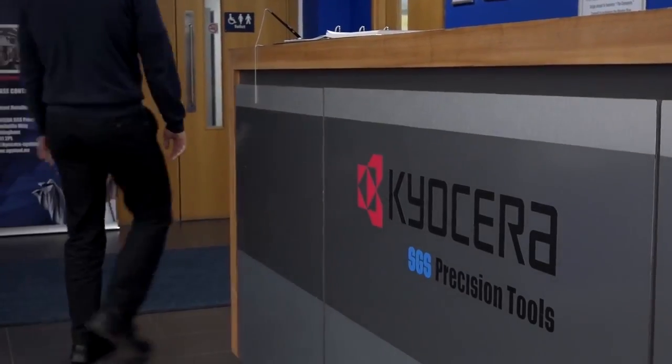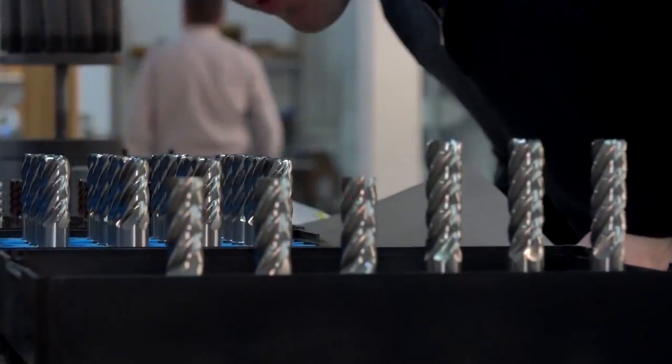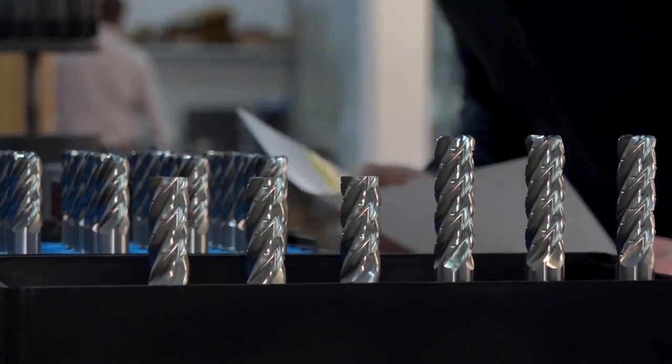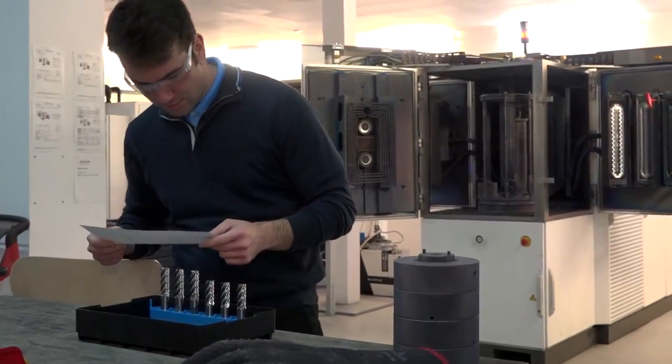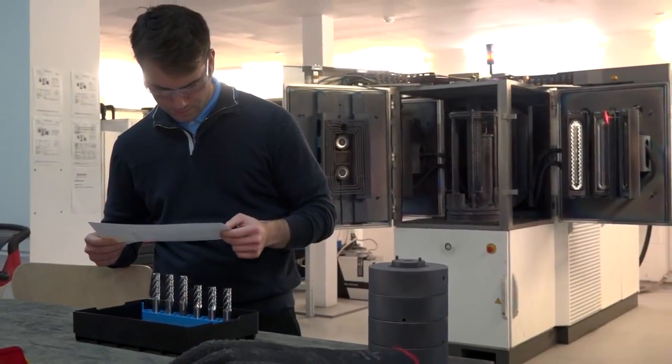Ian, you're the manufacturing manager here at Kisira SGS, but for those engineers that don't know you guys, what do you do here? Okay, so we predominantly manufacture special tooling here. We also do regrinding and modifications, but what differentiates us from our competitors is actually looking at the substrate, the geometry and the coating. We actually put all of that together to look at what is the best combinations for specific applications for our customers.